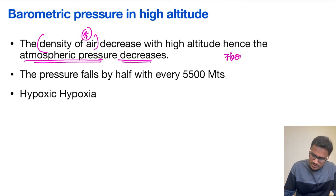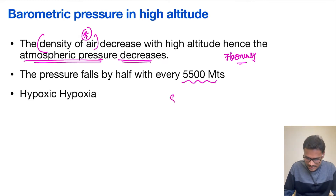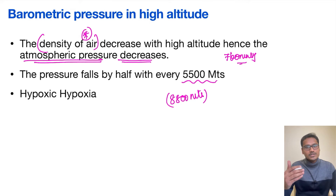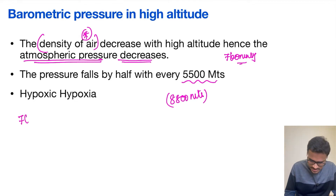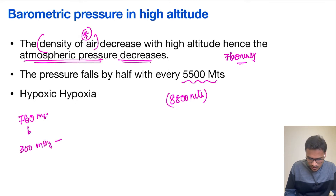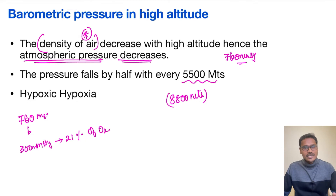The pressure at sea level is around 760 mmHg. This pressure will halve at the height of 5500 meters. The Himalayas are at the height of 8800 meters, so it is going to come down below half. If the barometric pressure drops, the percentage of gases remains the same — oxygen is still 21% — but the overall partial pressure of oxygen is going to come down.